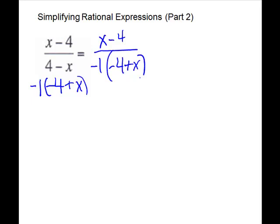Now, if you look closely, x minus 4 and negative 4 plus x are actually the same. They both have positive x and they have a minus 4. So they can divide out.